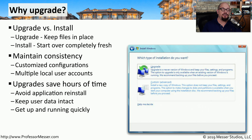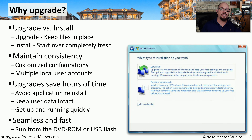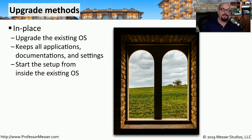This can save you an enormous amount of time. You won't have to install any of the applications, you won't have to rebuild any of the user account information, and all of the data will be there waiting after the installation is done. This is something you can do very quickly from a USB drive or a DVD-ROM. You would simply run that upgrade directly from the installation media. If you are performing an in-place upgrade, you're keeping all of your applications and all of your documents in place. To perform this upgrade, you would plug in your USB drive or install your DVD-ROM and then launch the setup from inside your existing operating system.